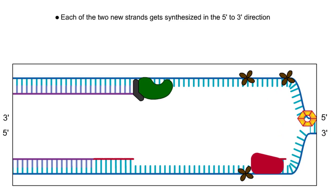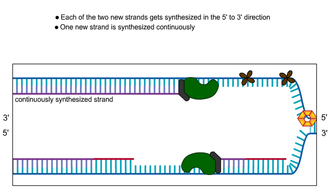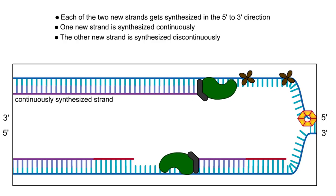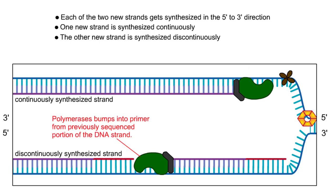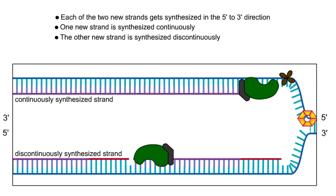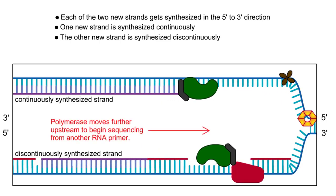One polymerase can remain on its DNA template and copy the DNA in one continuous strand. However, the other polymerase can only copy a short stretch of DNA before it runs into the primer of the previously sequenced fragment. It is therefore forced to repeatedly release the DNA strand and slide further upstream to begin extension from another RNA primer.